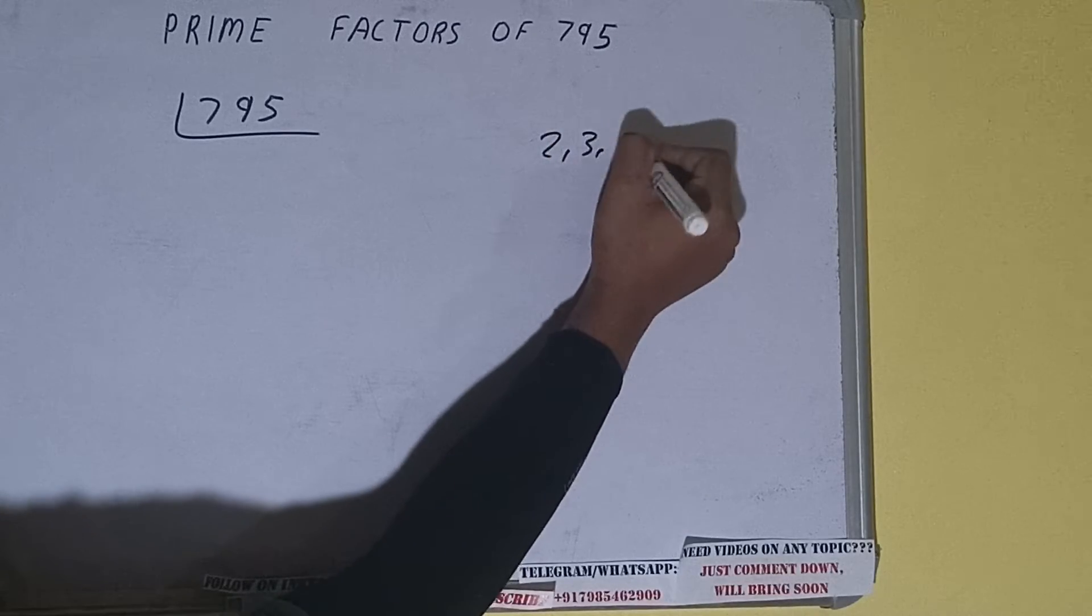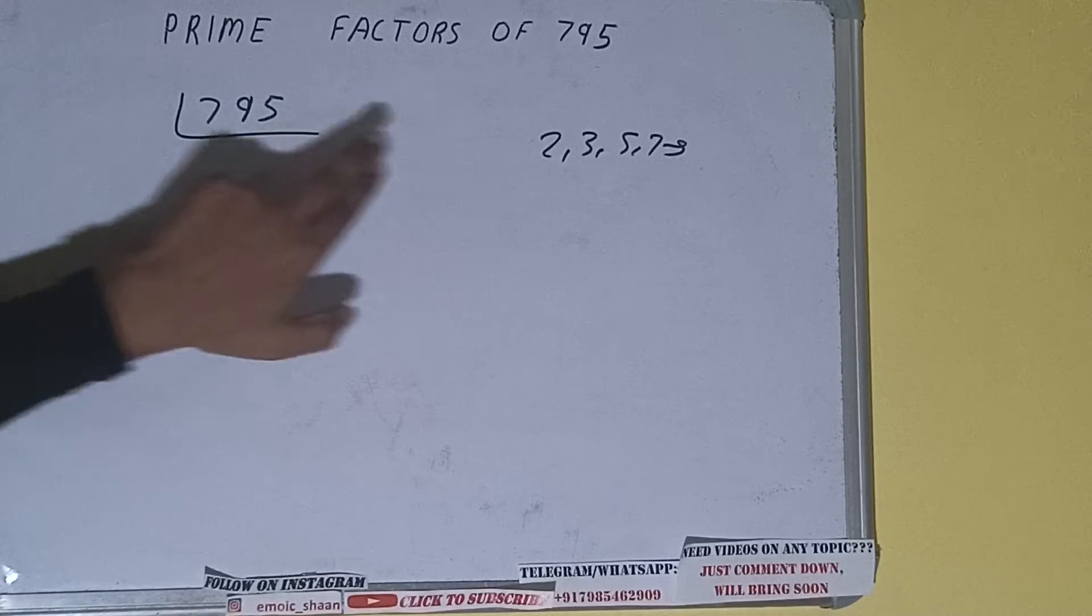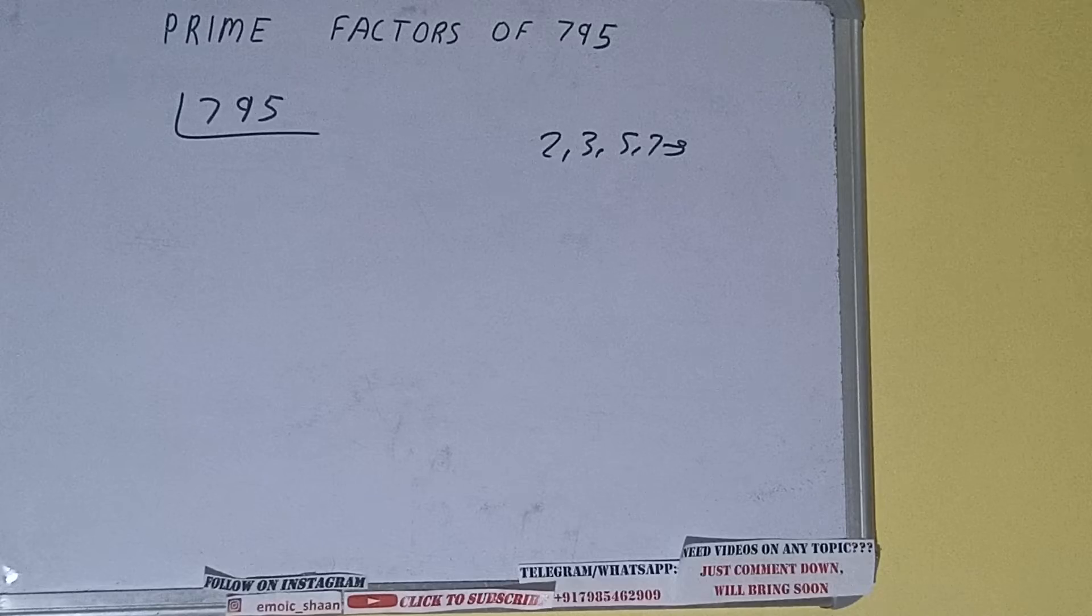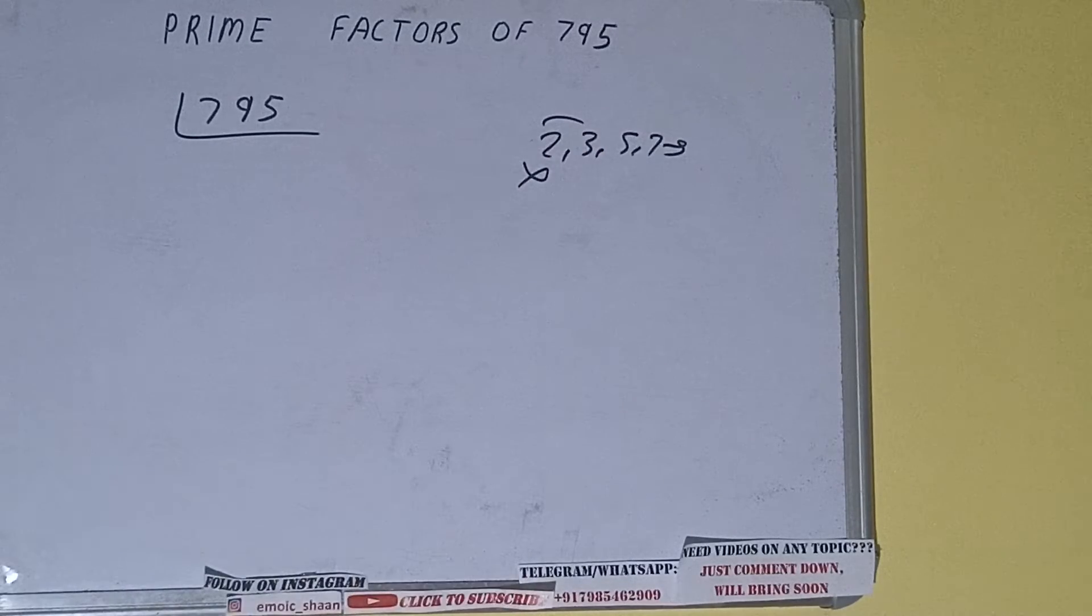We'll check with the lowest prime number we have, that is 2. Is the number 795 divisible by 2? No, it is not because the number is odd. So we'll be checking with the next lowest prime number, that is 3. Is the number 795 divisible by 3? Let's check... Yes, it is divisible by 3.